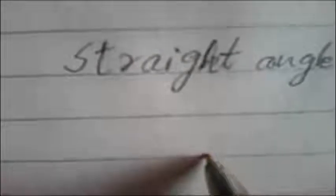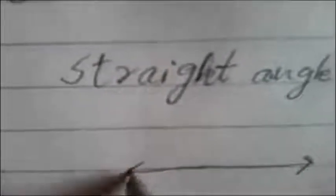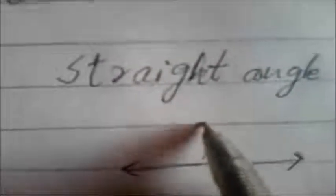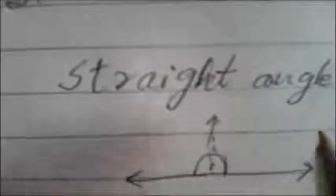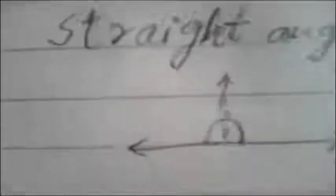The fourth type of angle is a straight angle. This is a straight angle. A straight angle has a straight line — the first ray is this one, and the second ray is directly opposite to it. When the ray moves from here to here and becomes straight with the first line, this is called a straight angle.